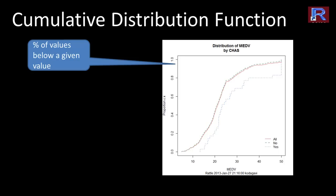This difference is partly an artifact of the number of values. Out of 506 values, most are neighborhoods that do not adjoin the Charles River — only about 10% do. So it makes sense that the distribution for non-adjoining neighborhoods is very similar to the overall, whereas the distribution for river-adjoining neighborhoods can be very different due to the smaller count.